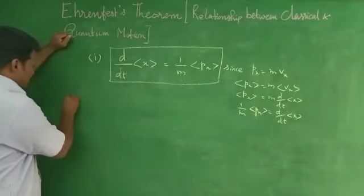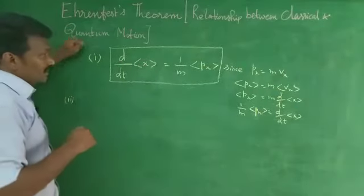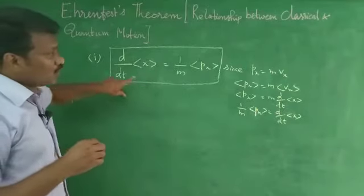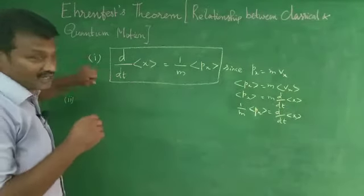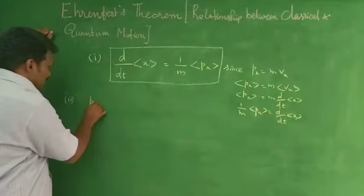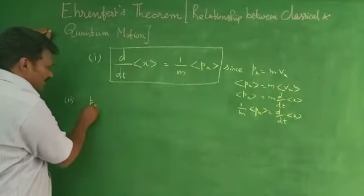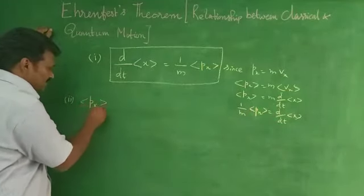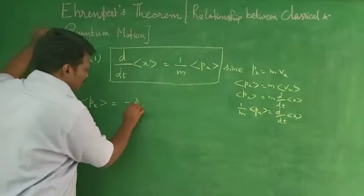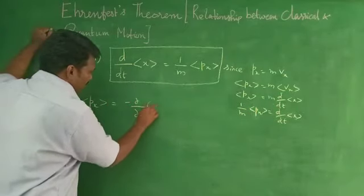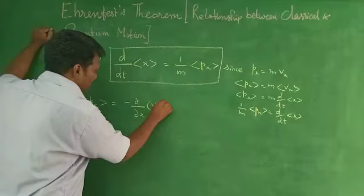Then next, another one is the relationship between momentum and potential. So according to that, momentum about x-axis, dpx by dt is equal to minus dV by dx.